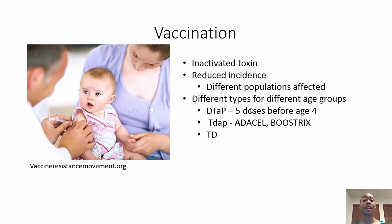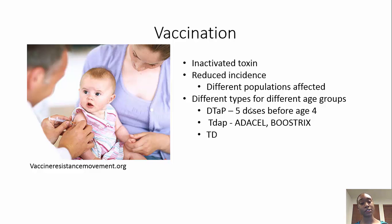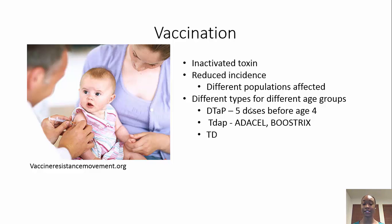An inactivated toxin is delivered through the vaccine. Because it is inactivated, it requires booster shots every 10 years after the age of 15. There are different types of shots given to different age groups. If you begin your immunizations in childhood, you'll receive the DTaP. If you begin in adulthood, you'll receive three doses of the Td vaccine.